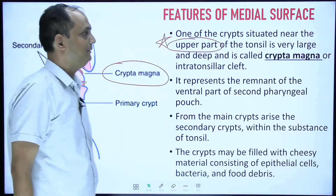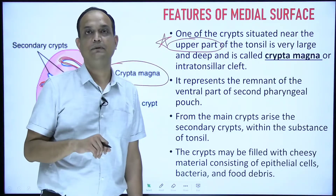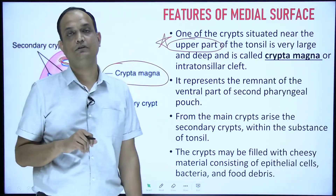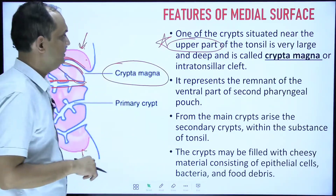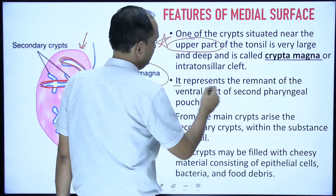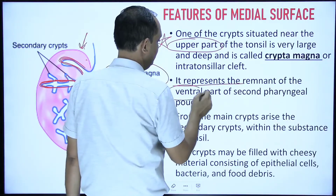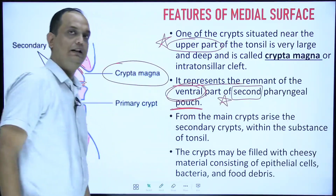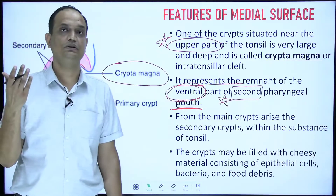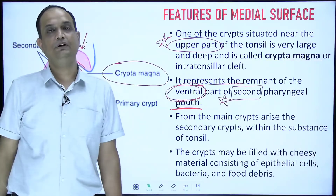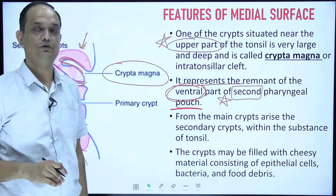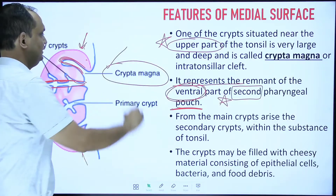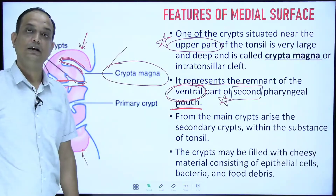Regarding the crypta magna: it is present on the medial surface, near the upper pole of the tonsil. It represents the remnant of the ventral portion of the second pharyngeal pouch. This is important for embryology — when studying the development of the head and neck, the adult derivative of the second pharyngeal pouch remnant is known as the crypta magna.